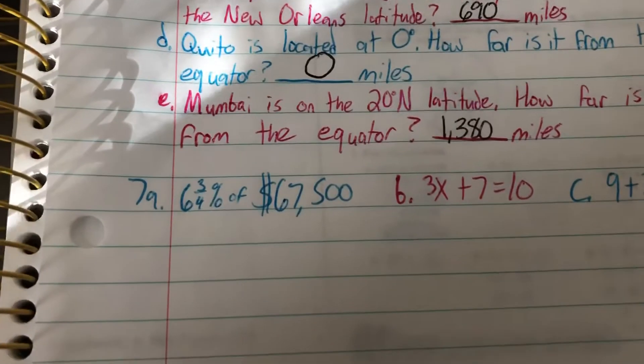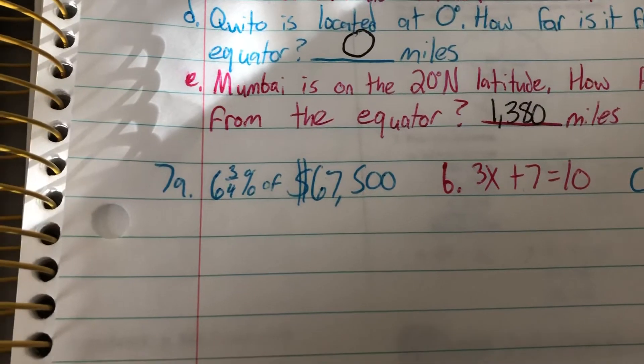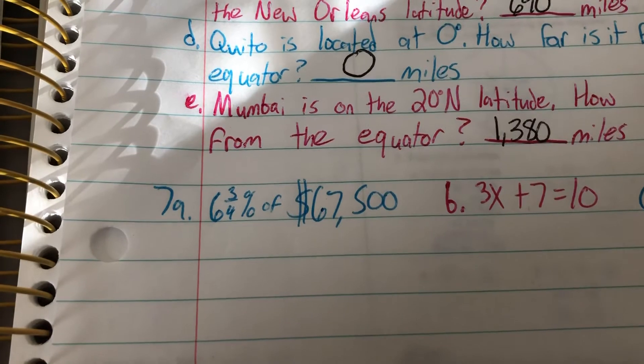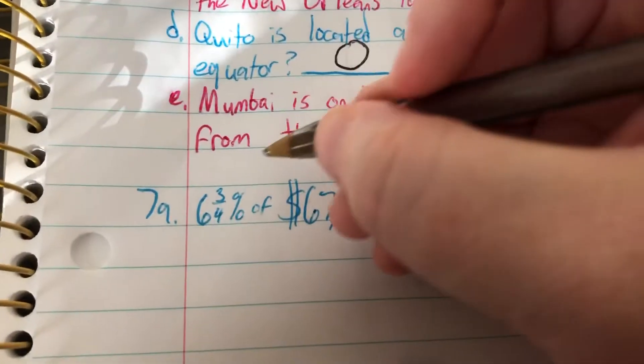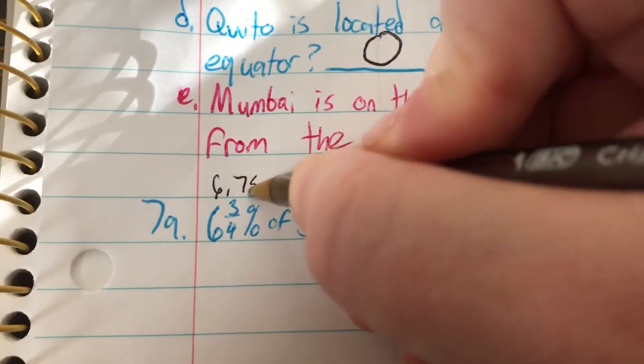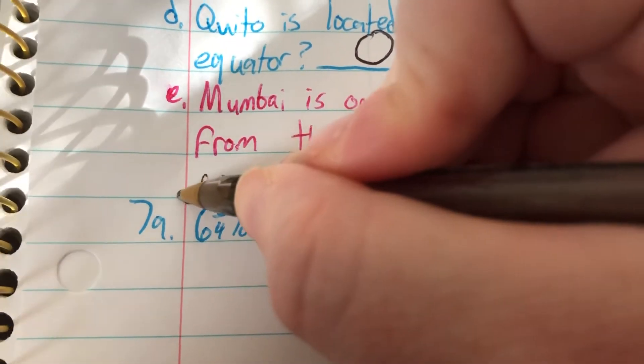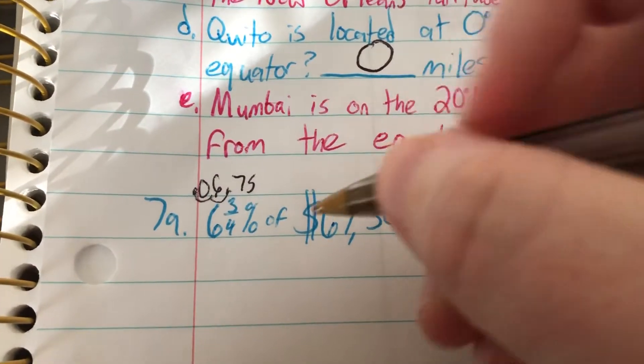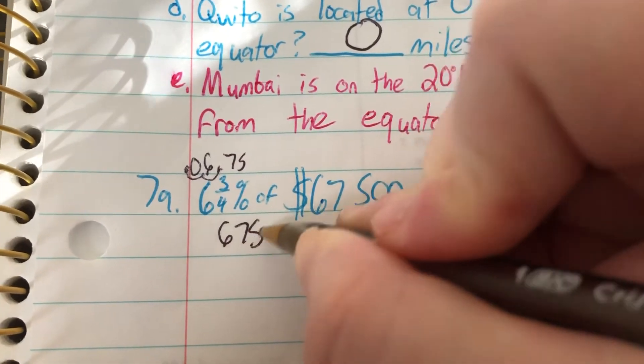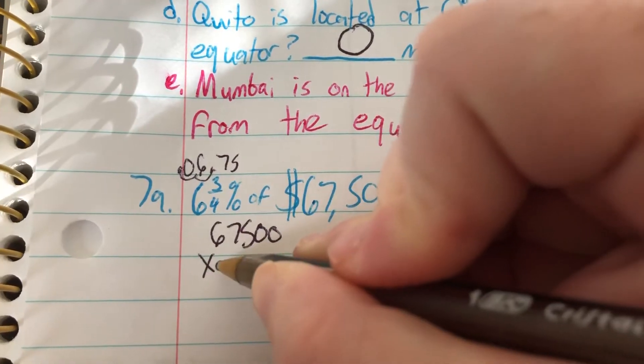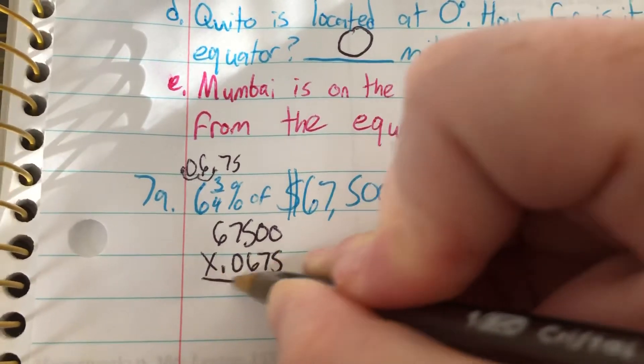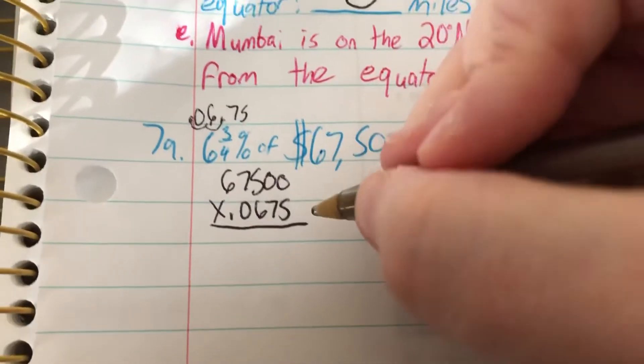On problem 7, we have kind of a mixture of problems. For 7a, we have 6 and 3 fourths percent of $67,500. So 6 and 3 fourths would be 6.75. But then we've got to move our decimal too. So it would be 67,500 times 0.0675.